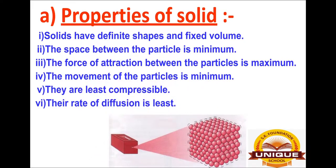Here is an example: a brick. You can see that the brick has a fixed shape and size, and a fixed volume. There is very little space between its particles, and there is a lot of attraction between them. That's why the particles are tightly packed and they don't move. This was the property of solids.